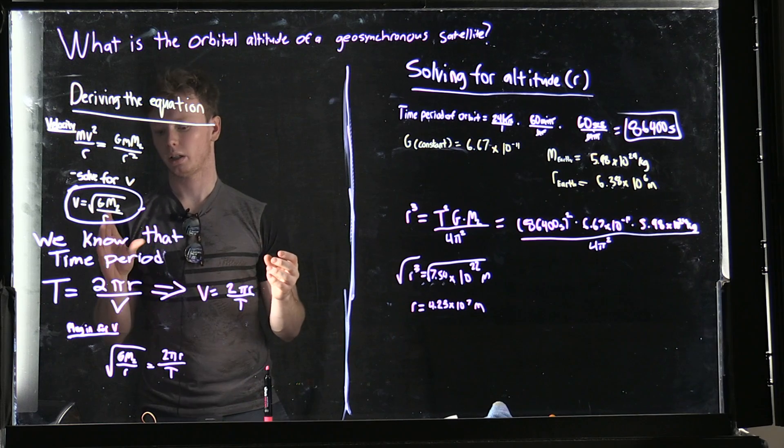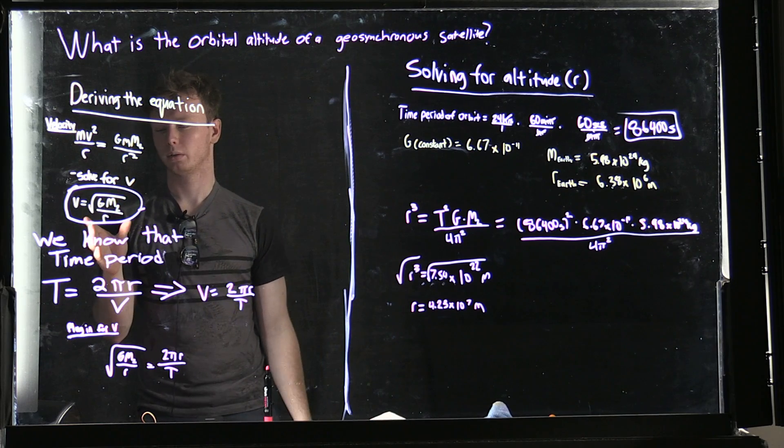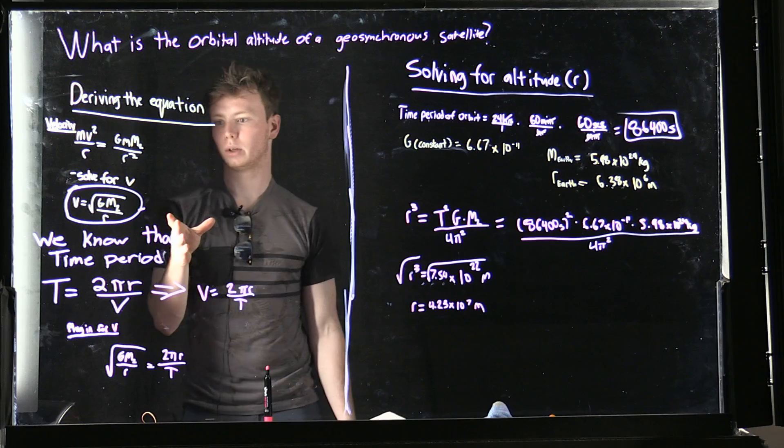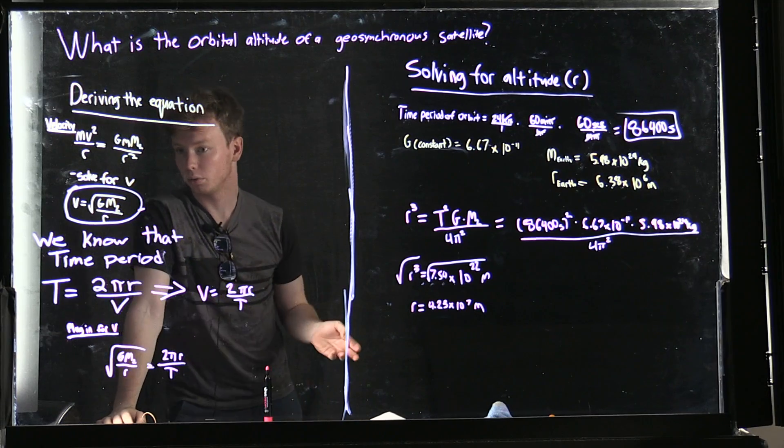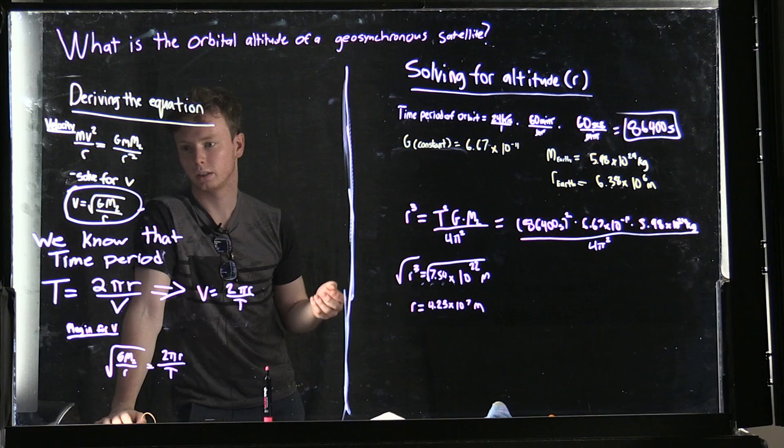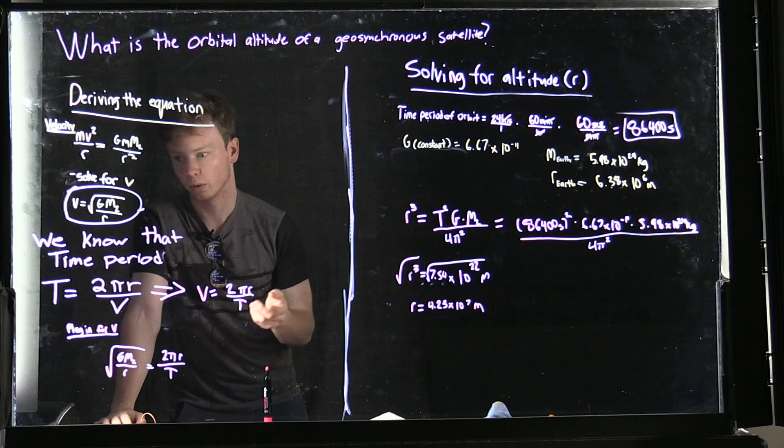We start with the equation for centripetal force and the equation for gravity, and we're going to solve for V. V ends up being equal to the square root of the gravity constant times the mass of Earth over the radius.